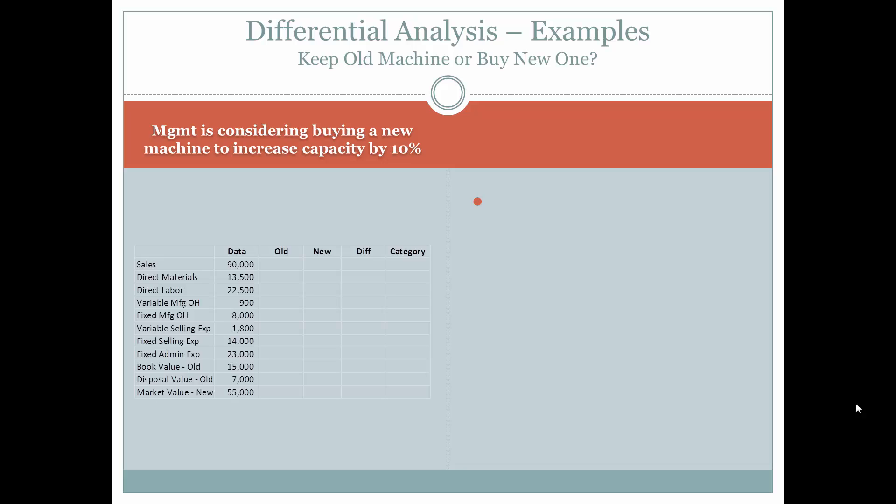Let's look at an example — deciding whether or not to keep an old machine or buy a new one. Management is considering buying a new machine to increase capacity by 10%. We have collected some data with respect to the machines and the decision. Let's look at what is different between the two decisions.